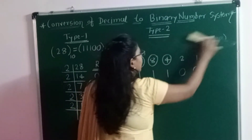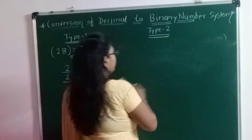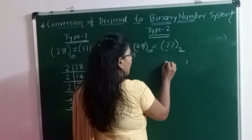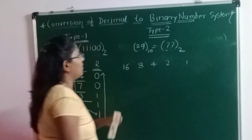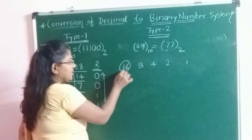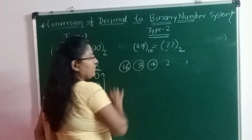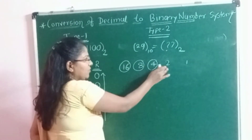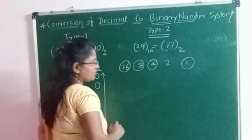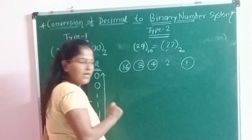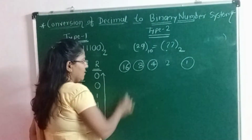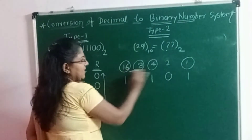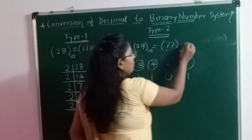Let me take another example: 29 decimal. What is its binary equivalent? Again write the weighted values: 1, 2, 4, 8, 16. For 29, obviously we have to select 16. Then 16 plus 8 equals 24, so select 8 also. 24 plus 4 equals 28, so select 4. Now if we add 2 it will become 30, which is greater than 29, so no need to select 2. Select 1. So the addition of the selected weighted values is 16 plus 8 equals 24, plus 4 equals 28, plus 1 equals 29. Below the selected weighted values write 1, and below non-selected write 0. The binary equivalent of 29 is 11101.